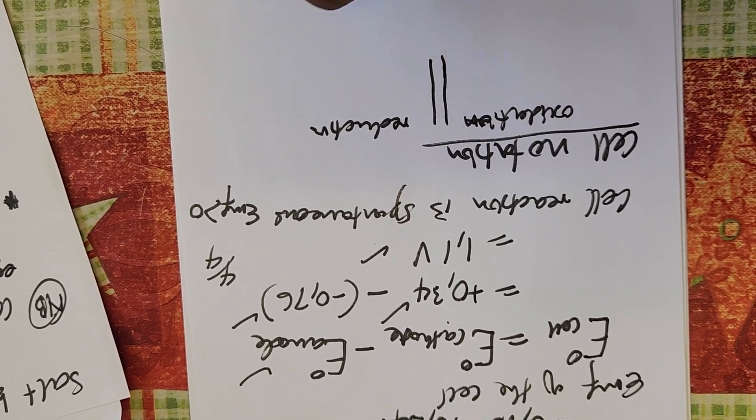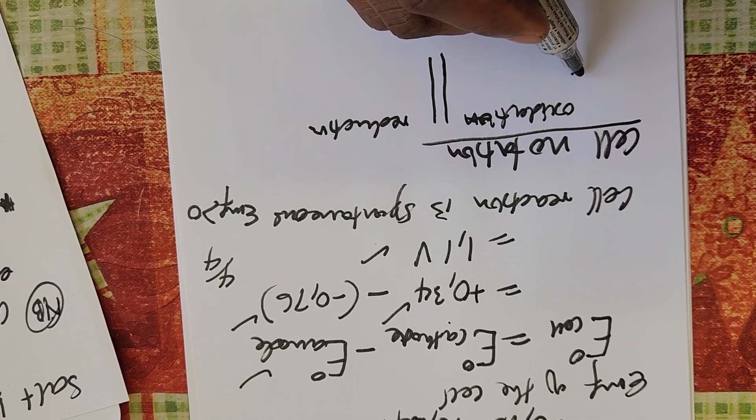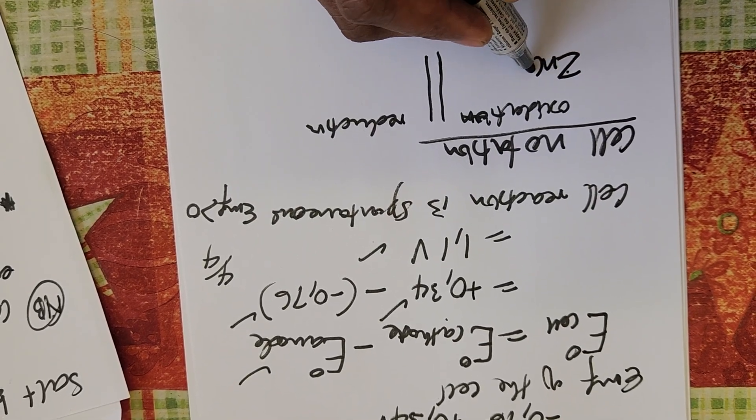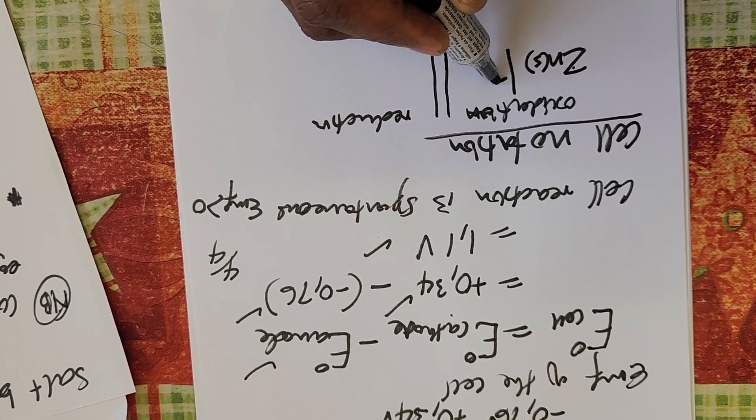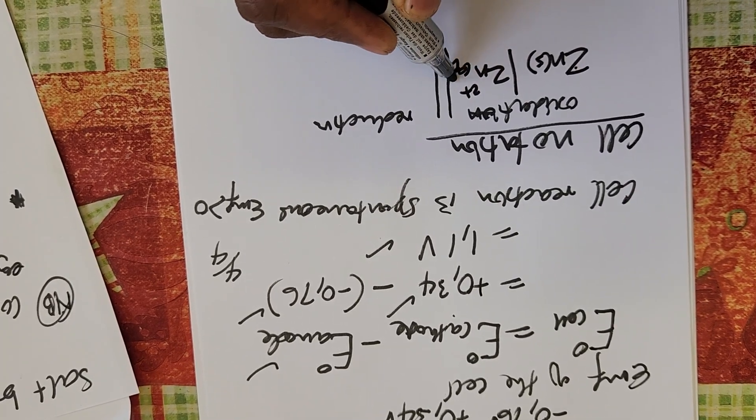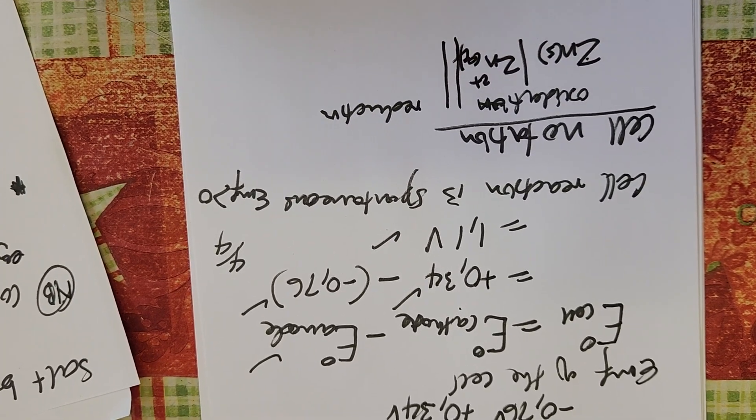We know zinc is oxidized. You go to the half reaction of zinc, copy from right to left—it changes from zinc solid to zinc ions.